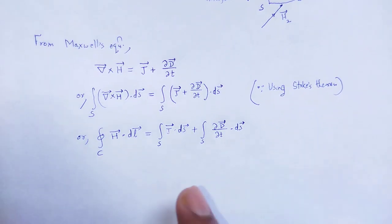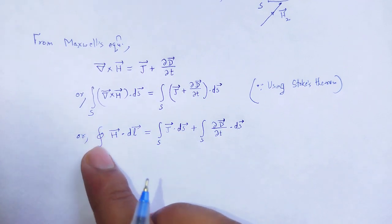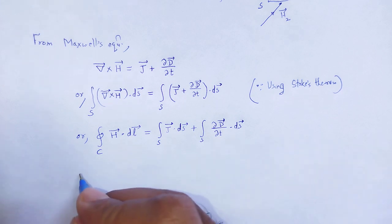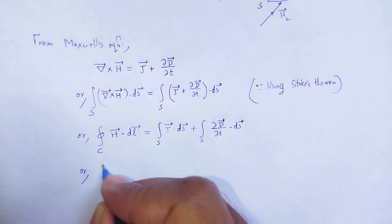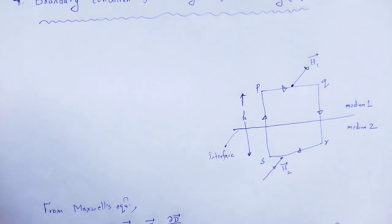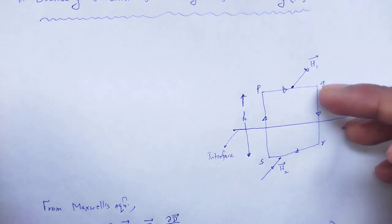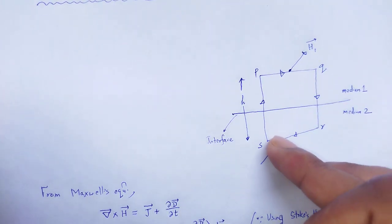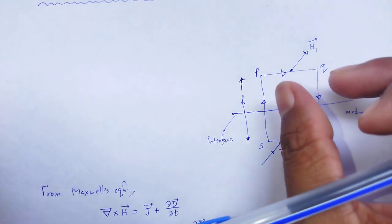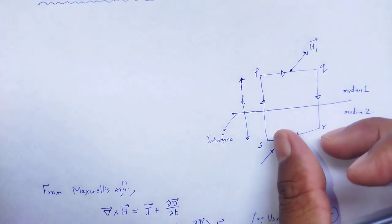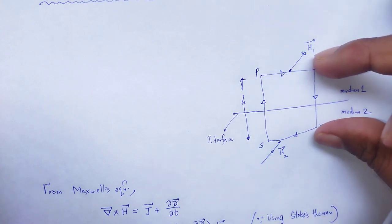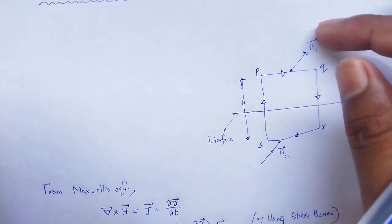The closed line integral of magnetic field intensity around the loop is broken into segments: PQ giving H1, QR giving S3, RS giving S2, and SP giving S3. The PQ and RS segments are the tangential components, and QR and SP are the normal components of the magnetic field intensity vector.